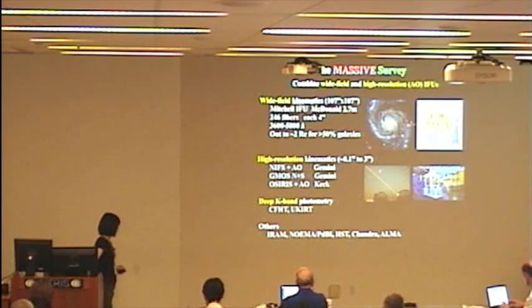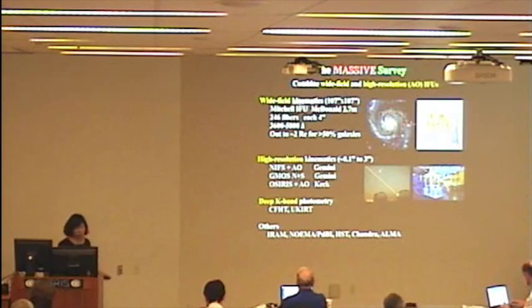And we are trying both with NIFS or OSIRIS with AO on and seeing limited GMOS, which gets us much higher signal to noise. And this is to map the stellar kinematics at the very center of the subset of galaxies in order to do black hole modeling. And we also now require deep K-band photometry for every galaxy in the survey using CFHT or UKIRT cameras.